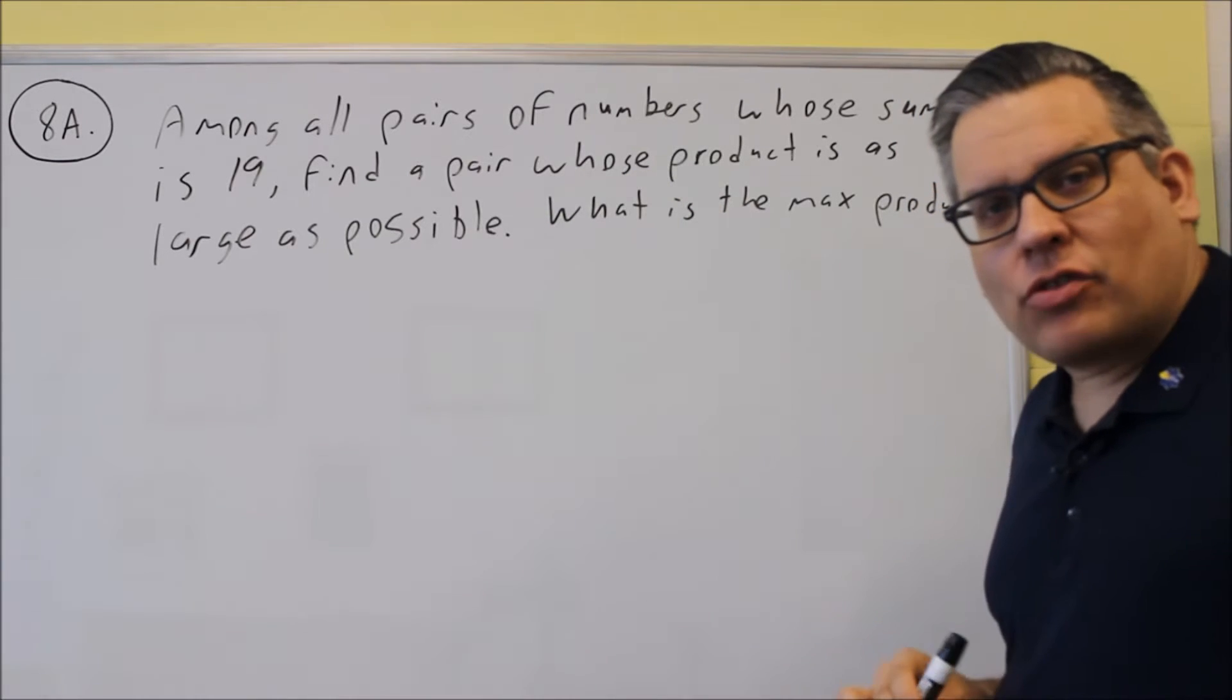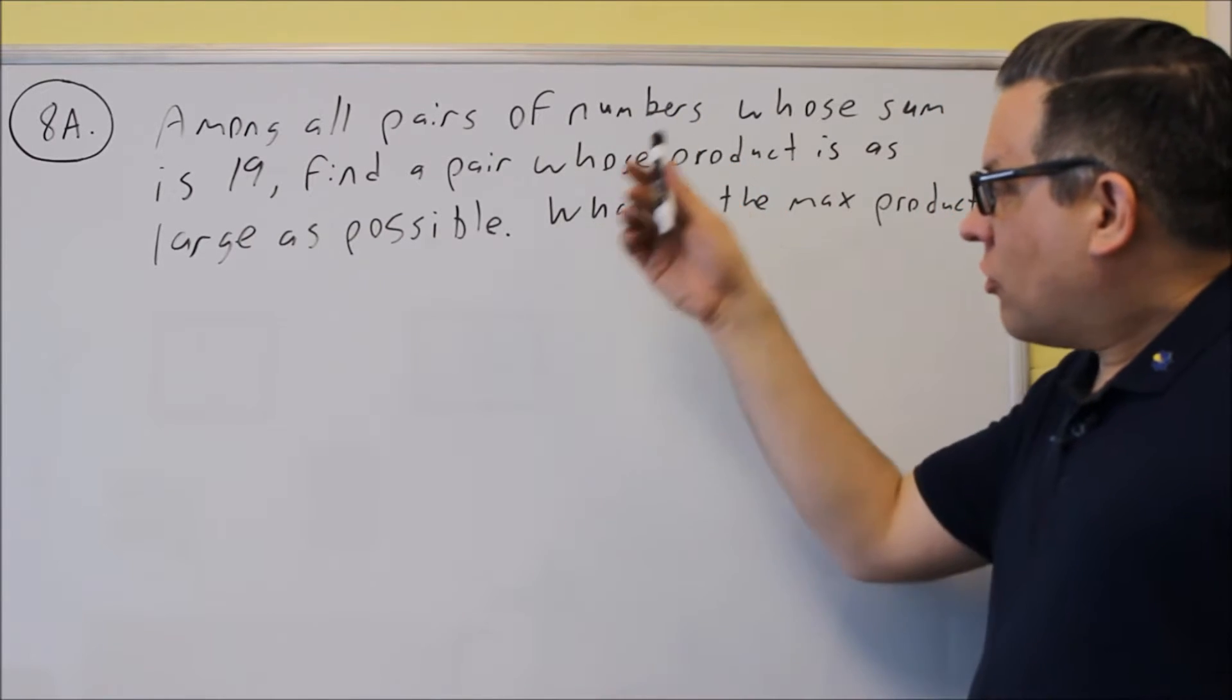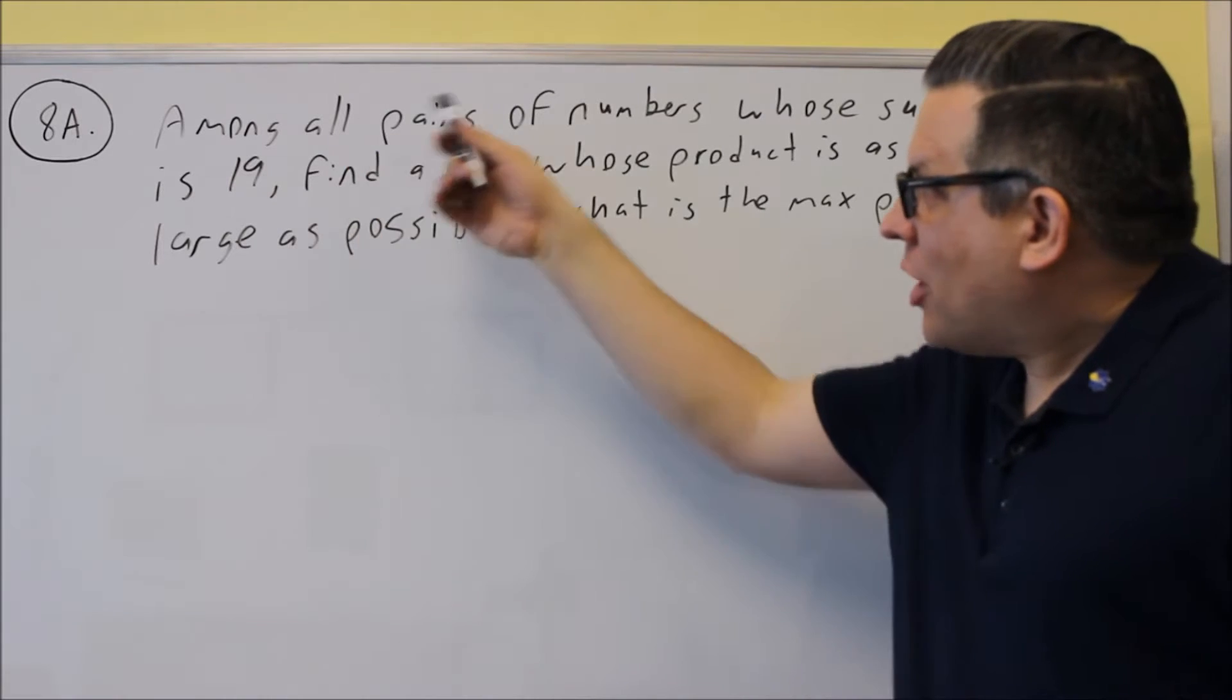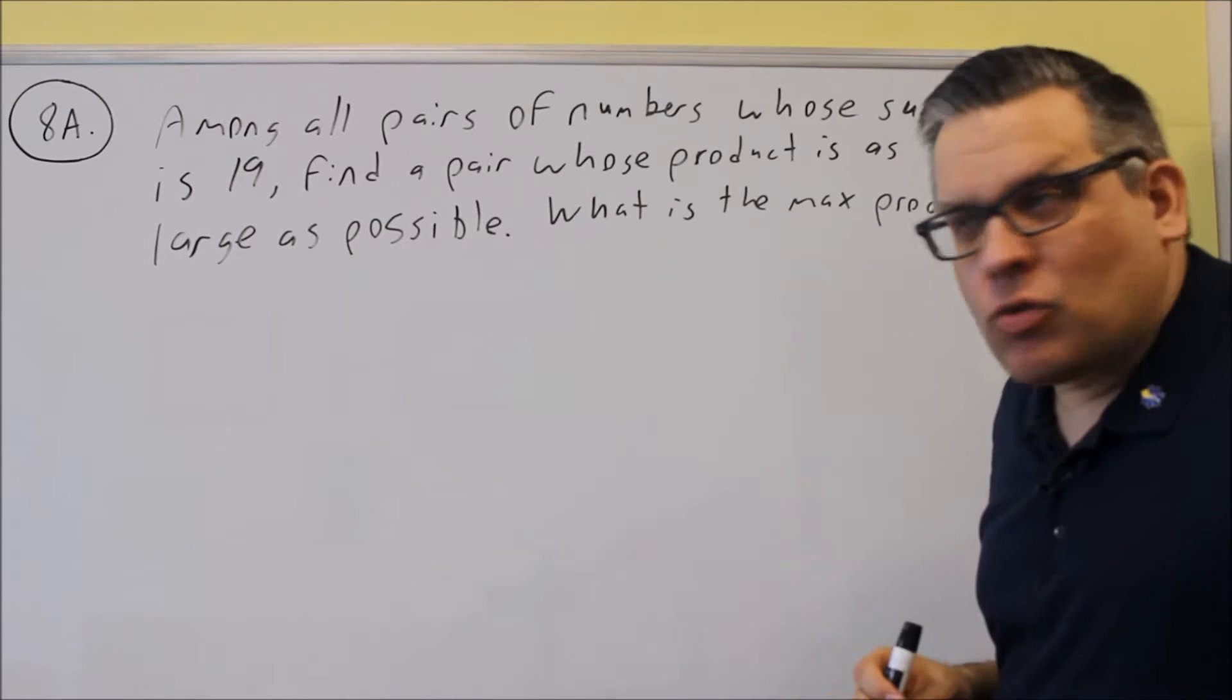So for this problem we have to do a little setup with some equations. So let's walk through each of these sentences and see how we can translate those. It says among the pair of numbers, okay so pair means we're looking for two numbers, let's call that x and y.